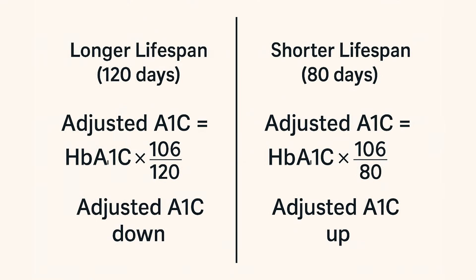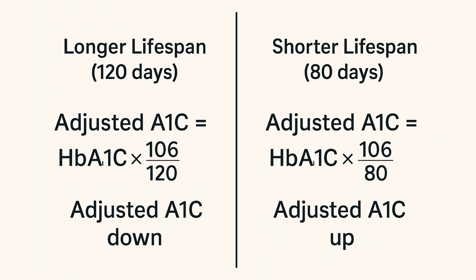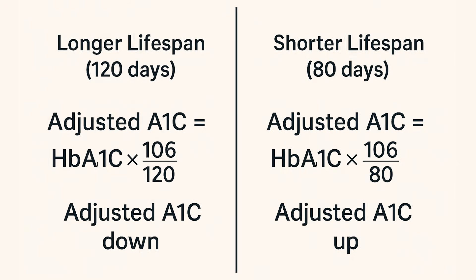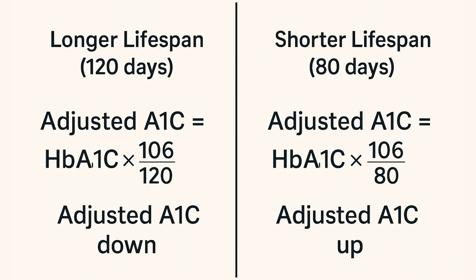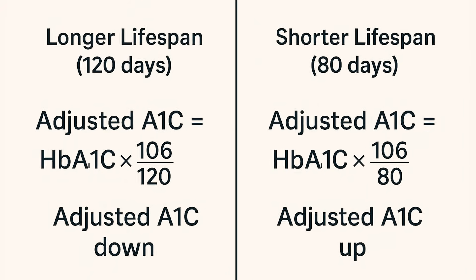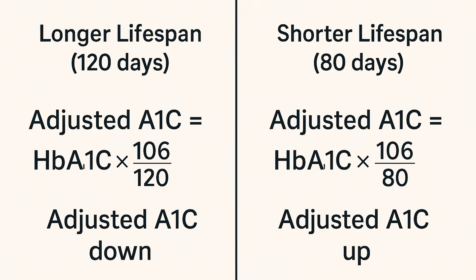Here's the calculation. Think of 106 days as a standard red cell lifespan. We can normalize anyone's lab A1C to that standard using this simple formula: adjusted A1C is approximately your lab A1C multiplied by 106, divided by your red cell lifespan in days.